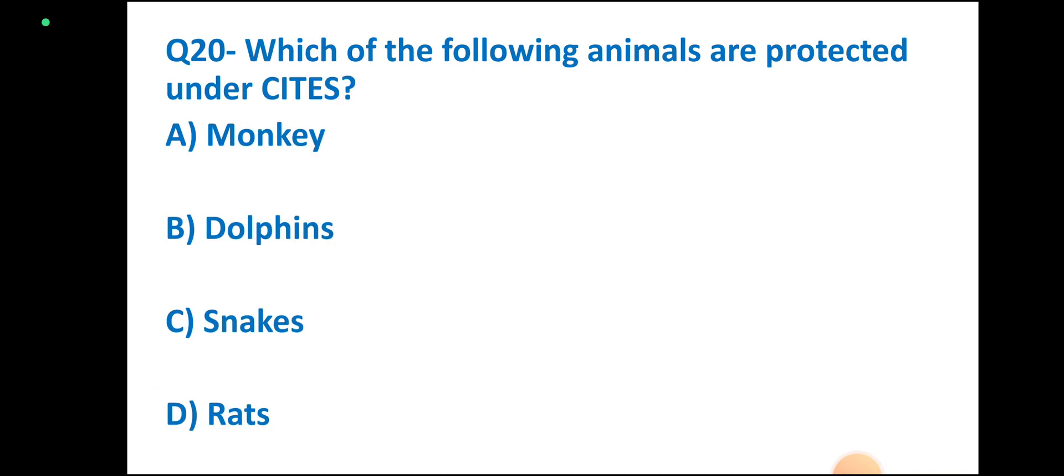Question number 20: Which of the following animals are protected under CITES? Options: monkey, dolphins, snakes, rats. Correct answer: dolphins.